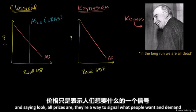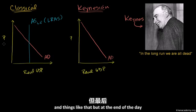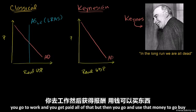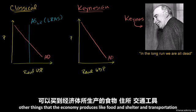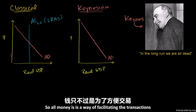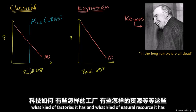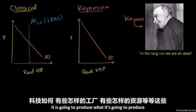The classical view says that all prices are a way to signal what people want and demand, but at the end of the day, prices and money are just facilitating transactions. You go to work, get paid, and then use that money to buy other things the economy produces — like food, shelter, and transportation. So money facilitates transactions, but the economy, based on how many people it has, what technology it has, what factories it has, what natural resources it has, is just going to produce what it's going to produce.